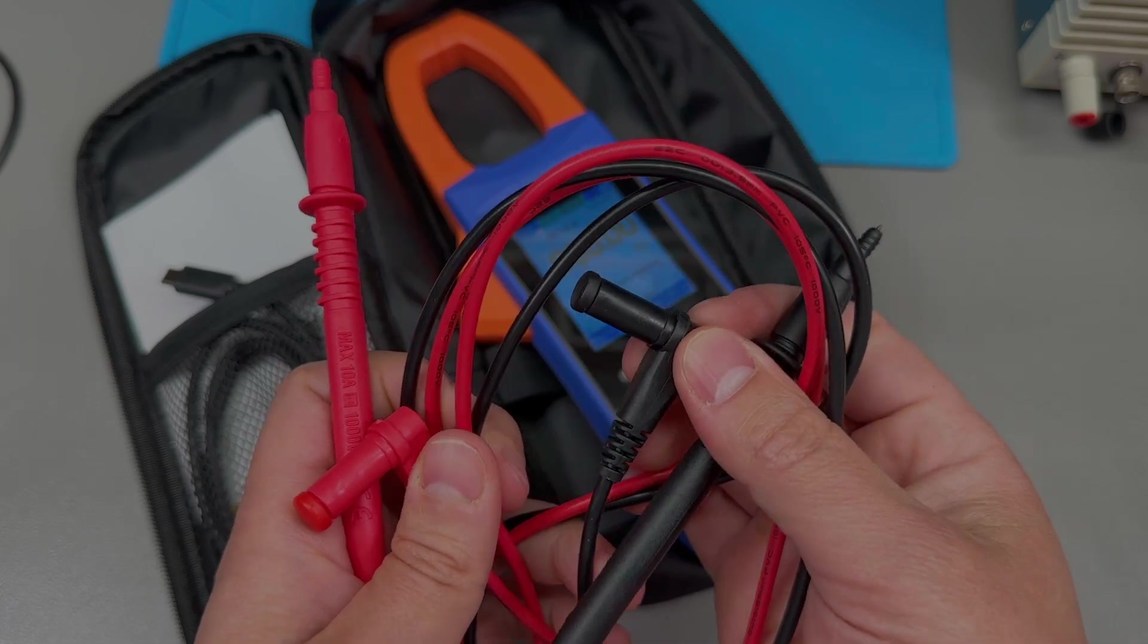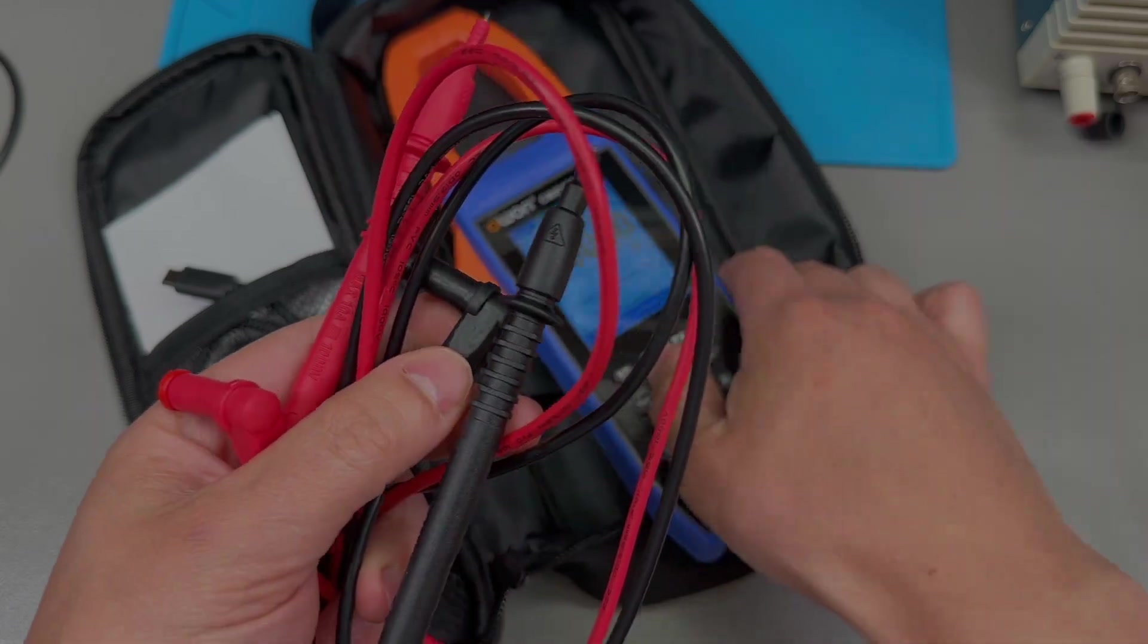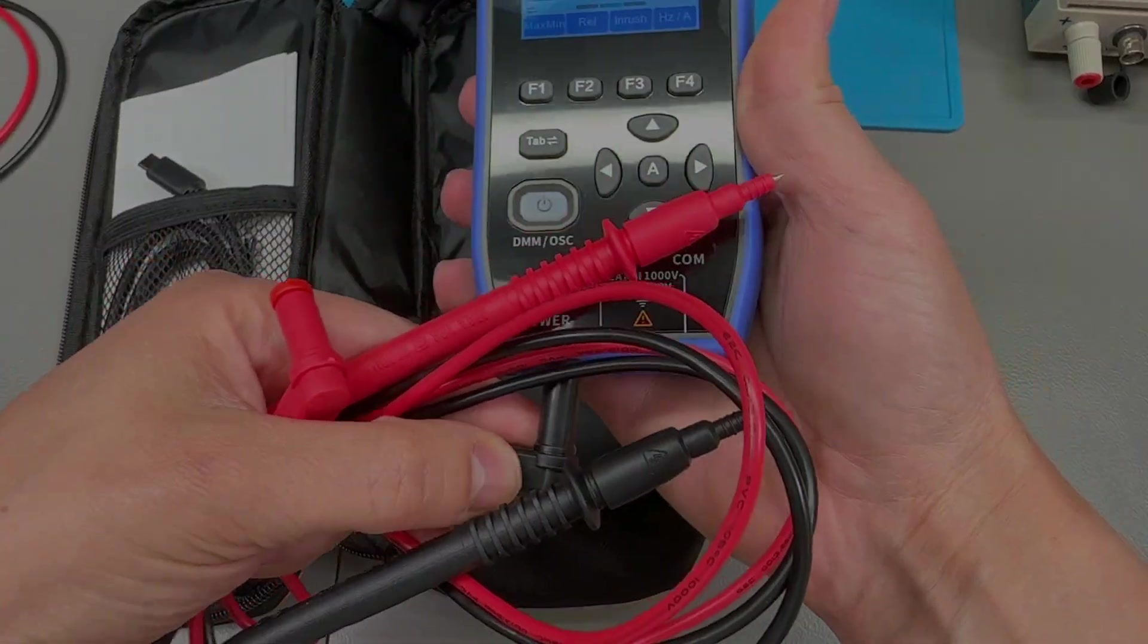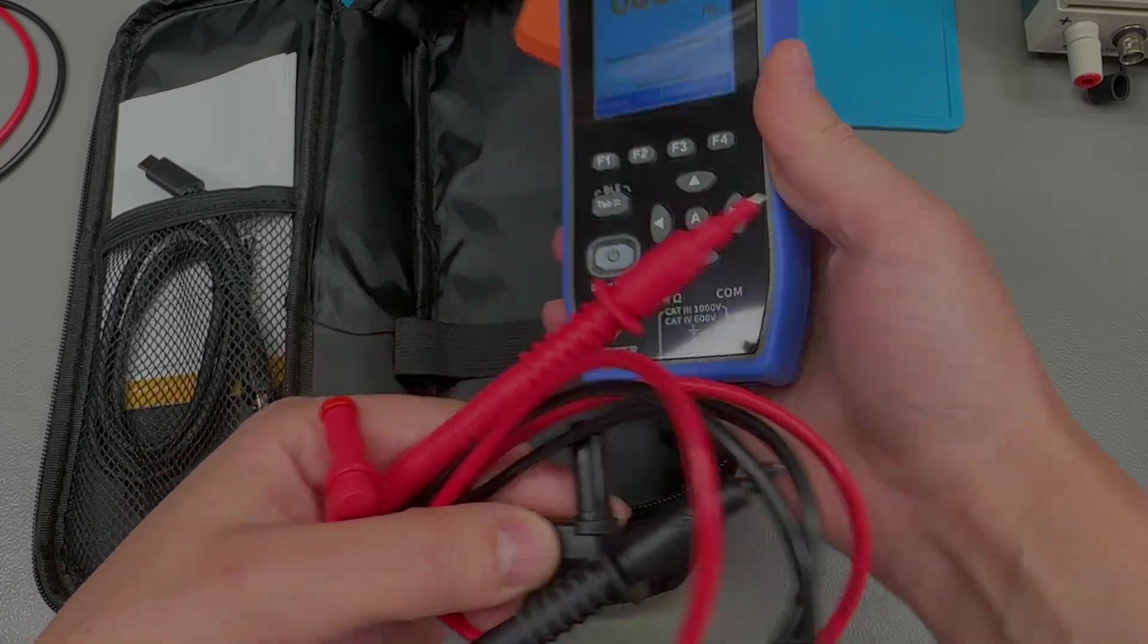They do come with a right angle connector which is not quite optimal for the insertion angle on the meter.